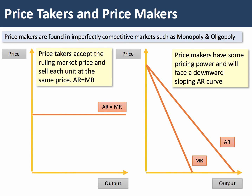We need to make a distinction between the price-taking firms we find in perfect competition, where the average and the marginal revenue are the same. They accept the prevailing market price. And in any imperfectly competitive market — including monopoly and oligopoly — firms have some price-setting power because they face a downward-sloping demand curve.